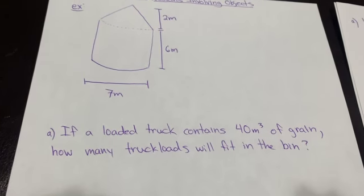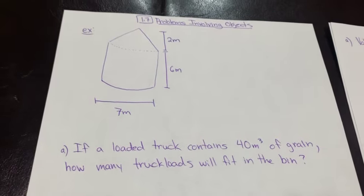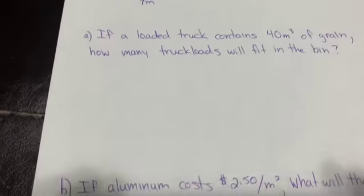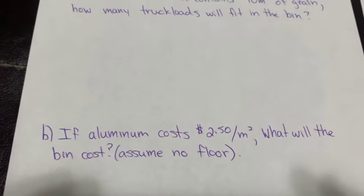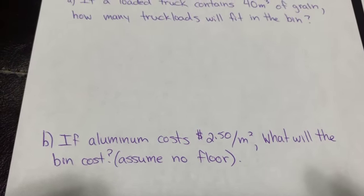One is saying that if a loaded truck contains 40 cubic meters of grain, how many truckloads are going to fit in that bin? And the second question is if aluminum costs $2.50 a square meter, what will the bin cost, assuming there's no floor?